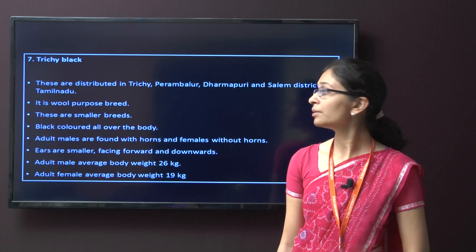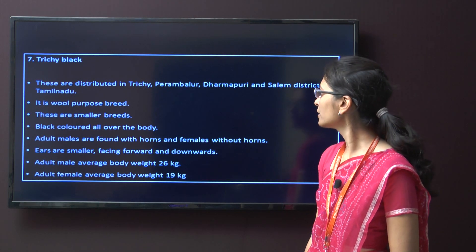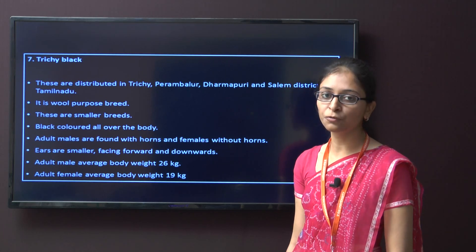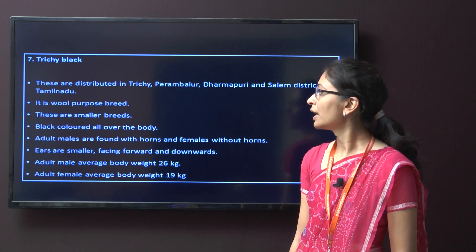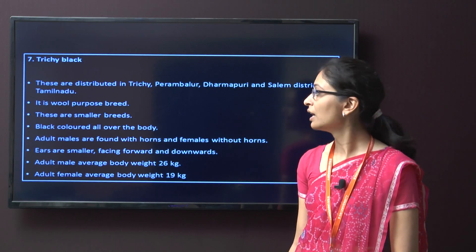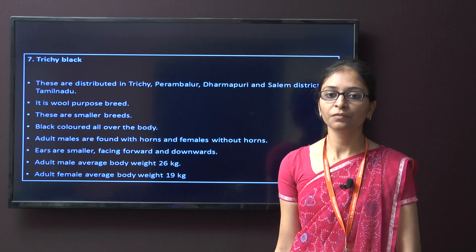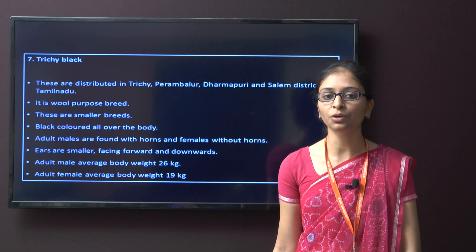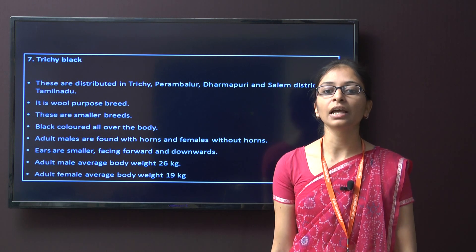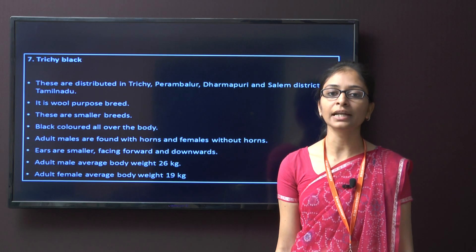Next is Trichy Black. These are distributed in Trichy, Perambalur, Dharmapuri, and Salem district of Tamil Nadu. It is a wool purpose breed of sheep. These are smaller breeds and the characteristics include black colour all over the body. Adult males are found with horns and females without horns. The ears are smaller, facing forward and downwards. The adult male average body weight is around 26 kg and female body weight is around 19 kg.